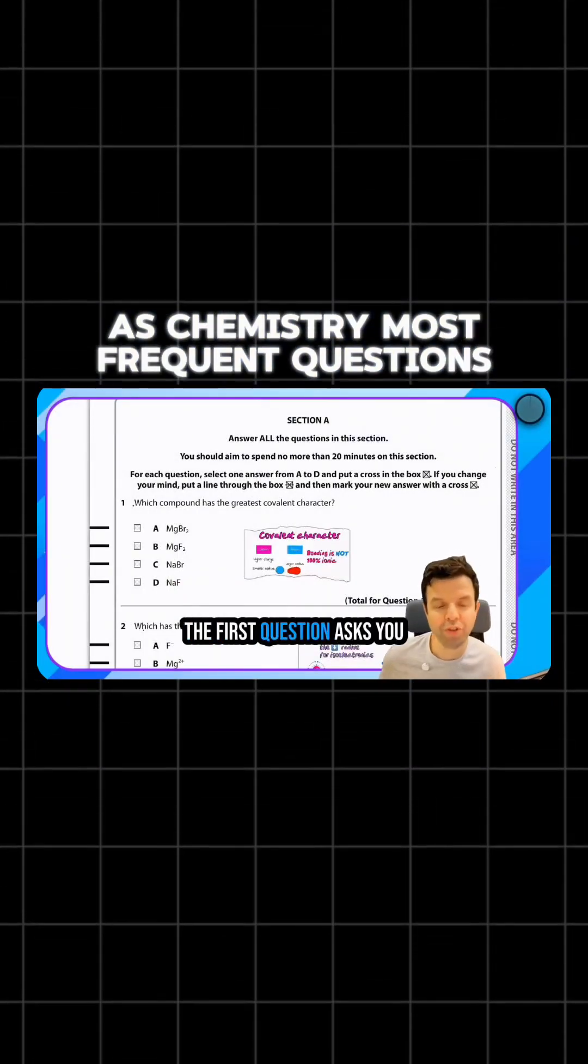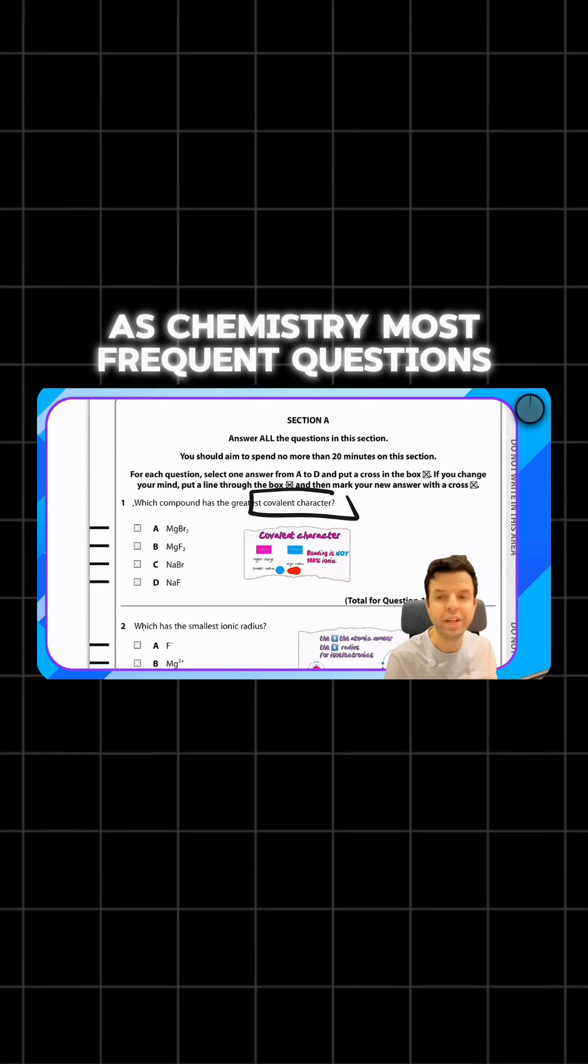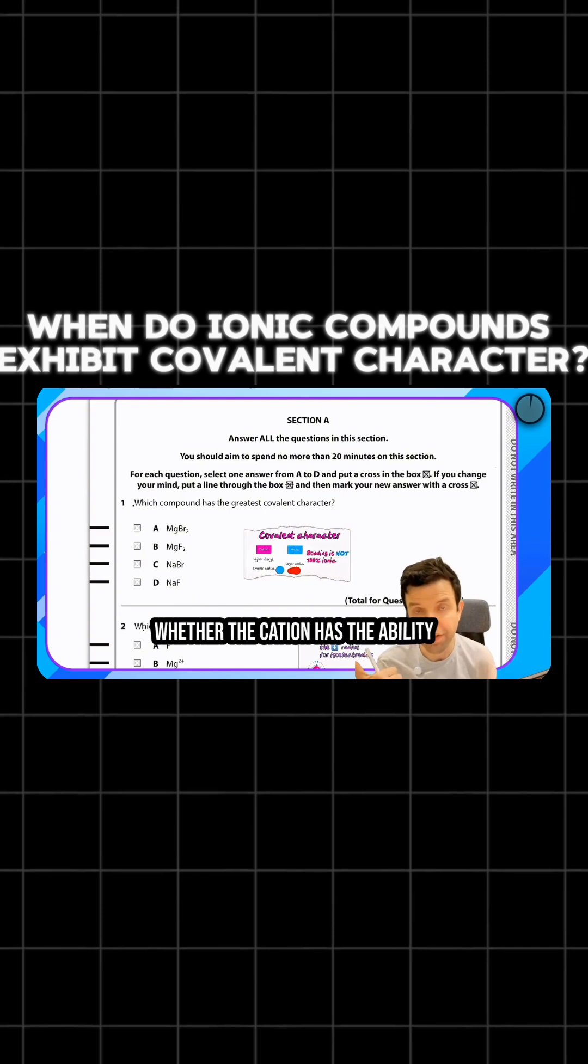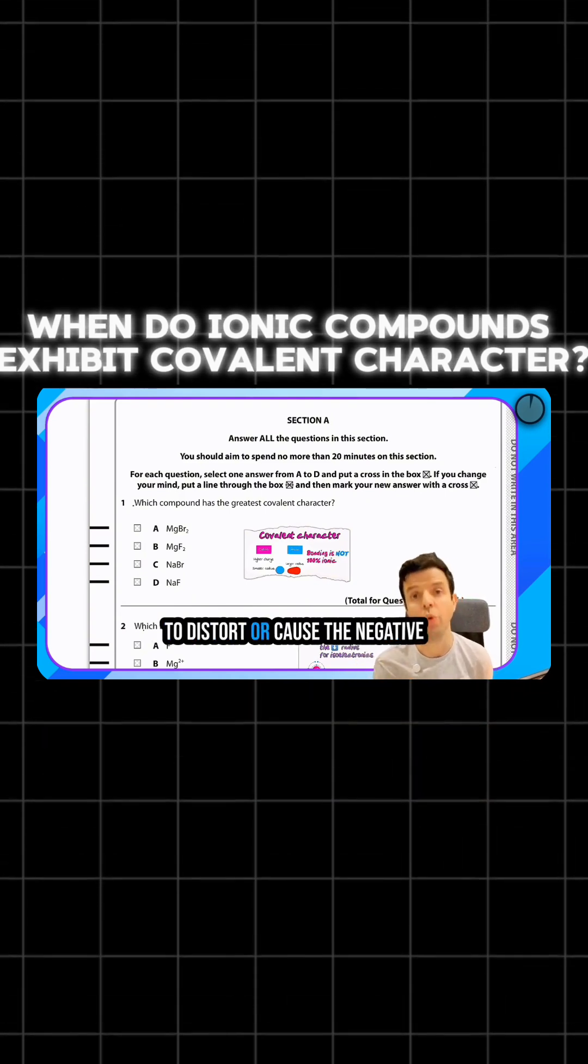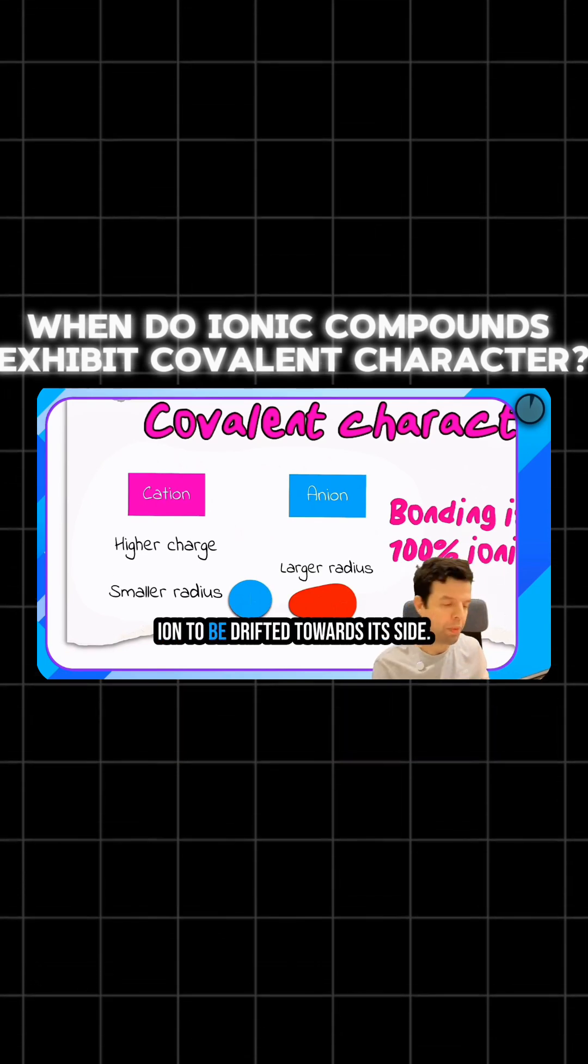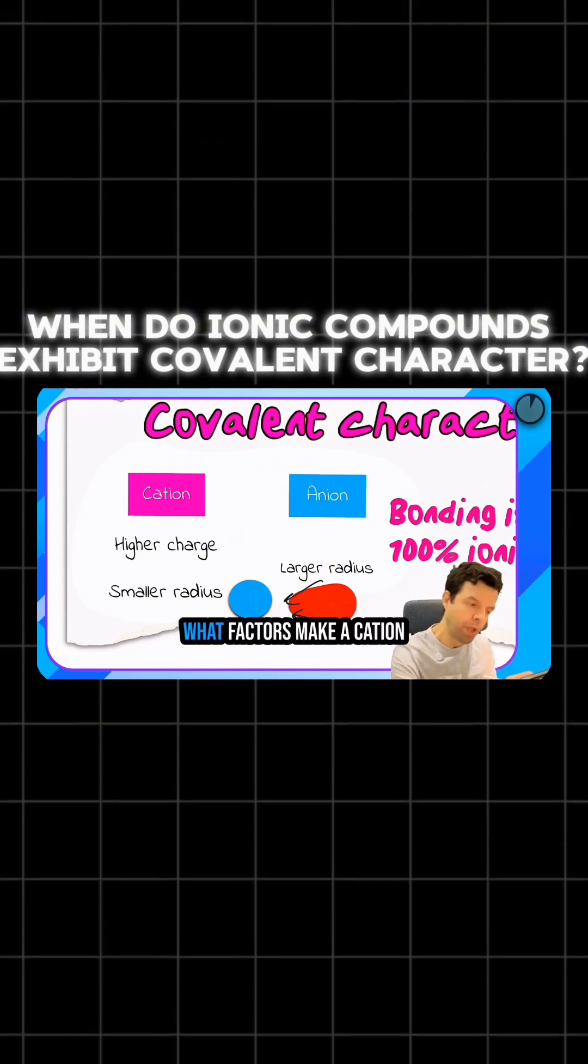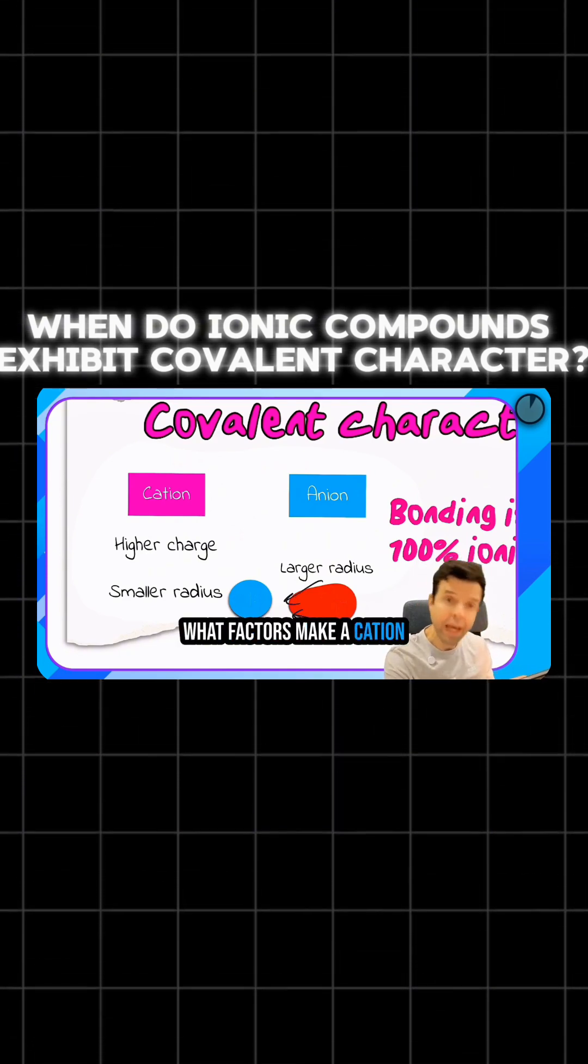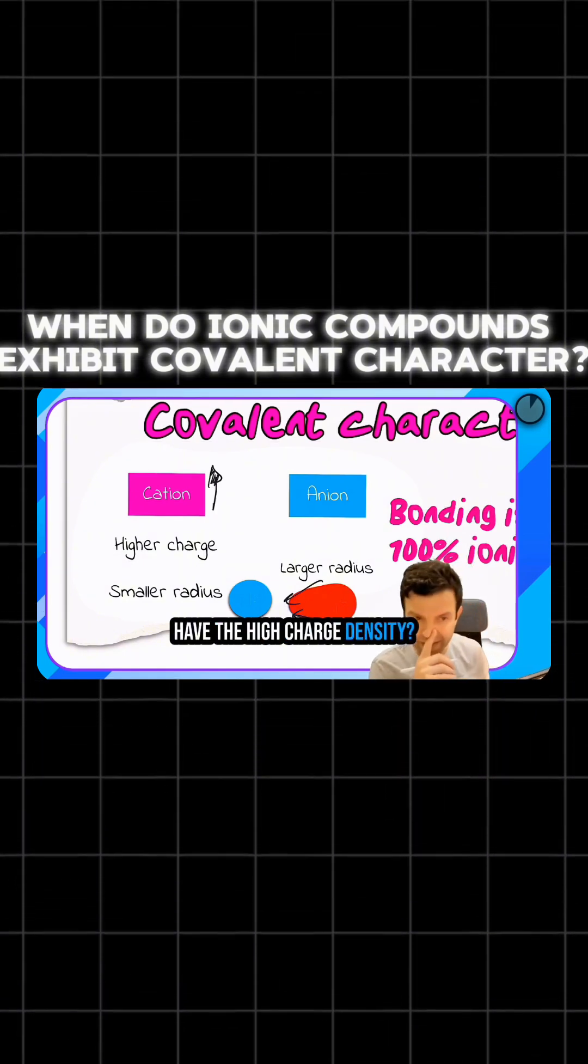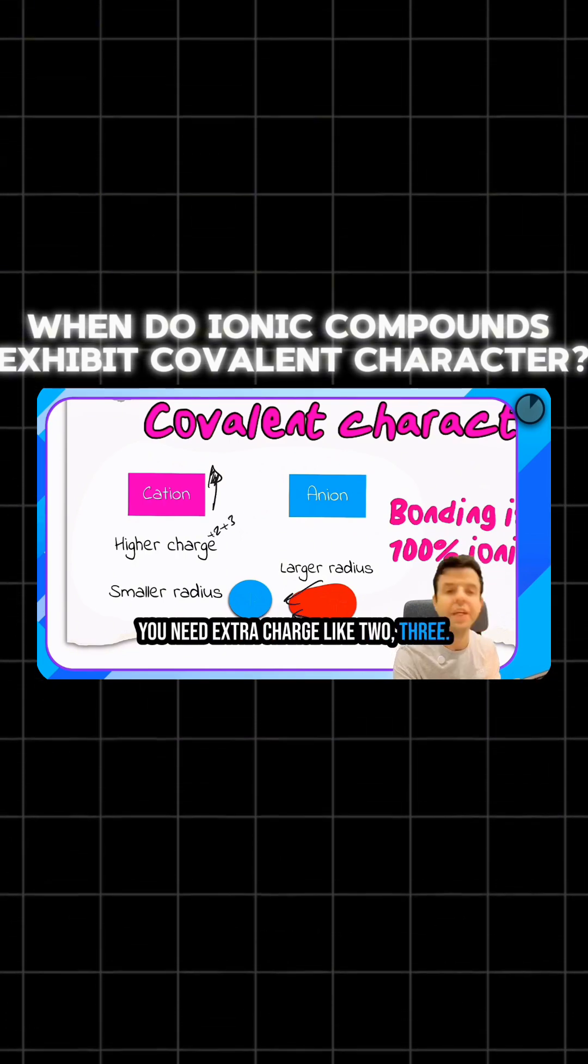Let's get started. The first question asks you about covalent character. That means they're asking us whether the cation has the ability to distort or cause the negative ion to be drifted towards its side.